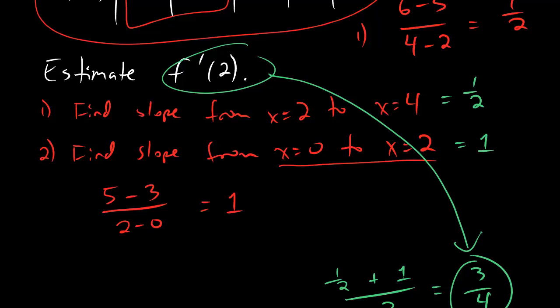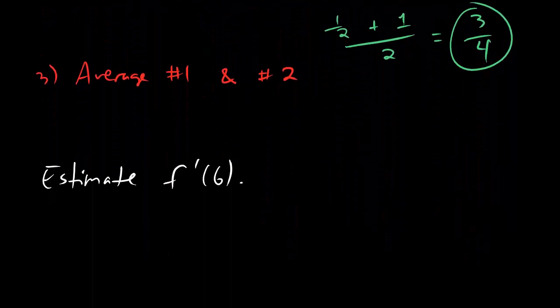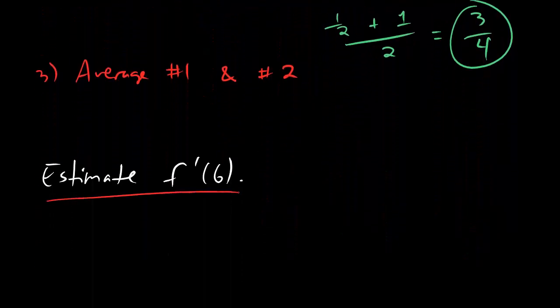Now, if you are asked to estimate the derivative at a point where you can't always go to the right and the left, then you only stick with the one that you know how to do. So for example, let's say we're asked to estimate f prime of 6.